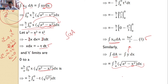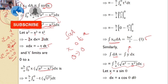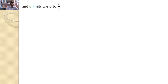Assume X = A sin θ, so DX = A cos θ dθ. The X limits vary from 0 to A. For the θ limits: when X = 0, θ = 0; when X = A, sin θ = 1, so θ = π/2. Therefore, θ limits vary from 0 to π/2.